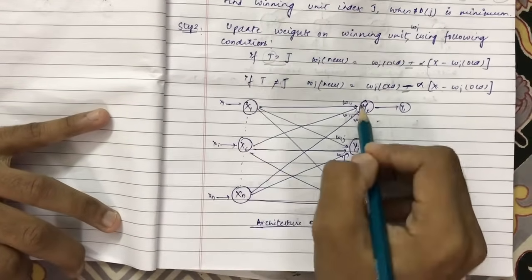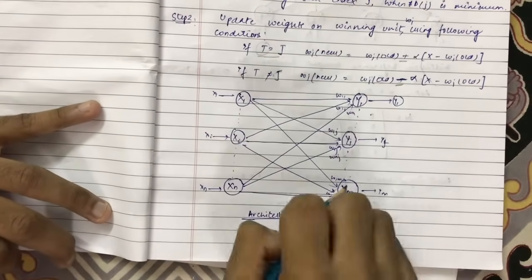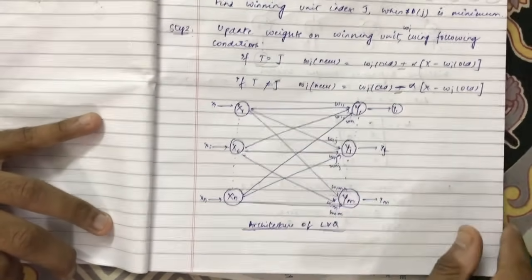This is the architecture for LVQ — these are the input vectors and these are the clusters with which they are connected.